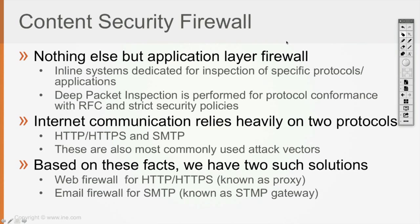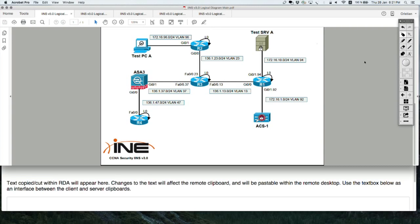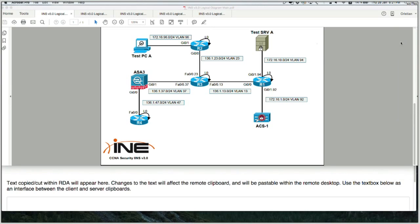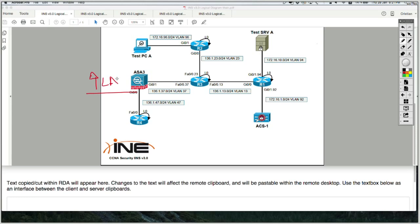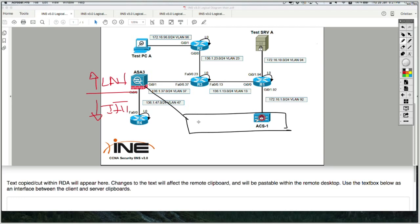Because SMTP is the next major attack vector and most commonly used protocol on the internet, we're going to have an email firewall for SMTP traffic, also known as the SMTP gateway. All email traffic leaving the LAN towards the internet, or all SMTP traffic coming from the internet, is going to go to this specific appliance — the SMTP gateway or email firewall — connected to the firewall.